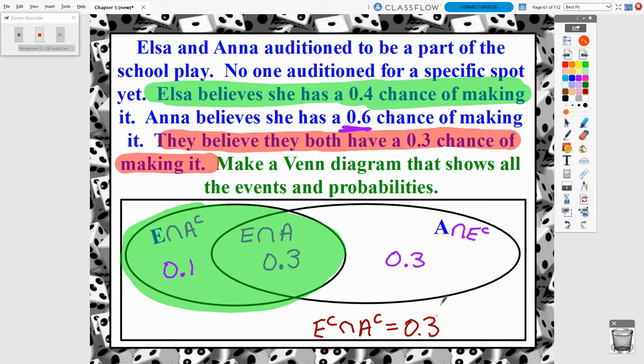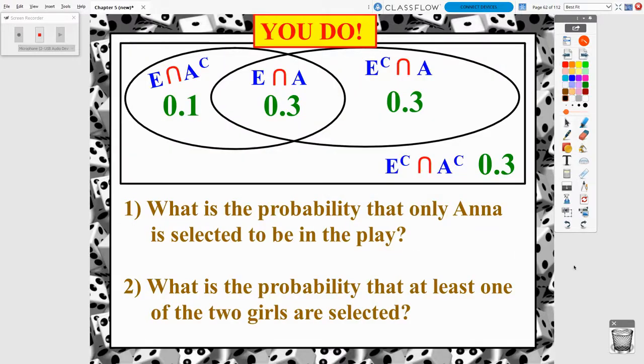And so 30%, 30%, 30%, and 10%, there is all 100% of the possibilities of Anna and Elsa making or not making the school play. So here again are all of those situations that we just came up with. And so now I want you, as your you do problem here, to answer these two probability questions based on this Venn diagram that we just completed. And that is finally all for this video.